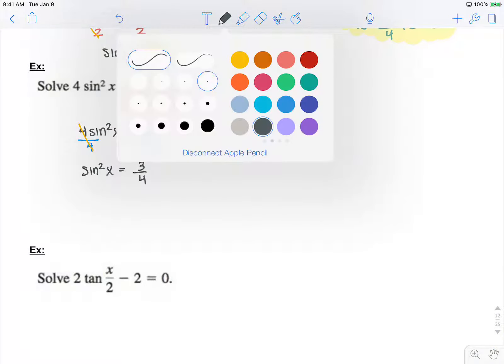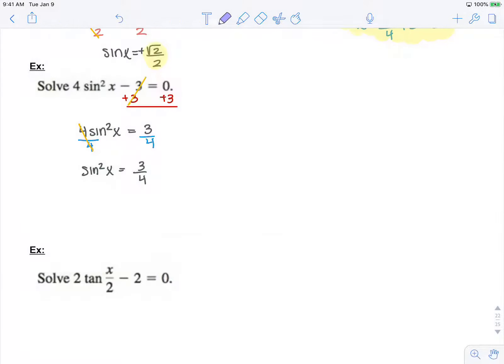Now, in order to just get sine instead of sine squared, I need to take the square root of both sides. Remember, when you take a square root, you get both a positive and a negative square root 3 over 2.